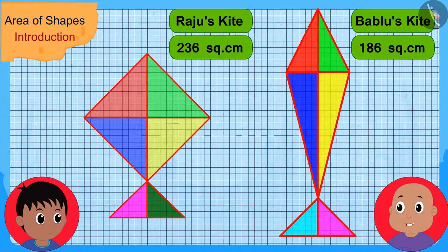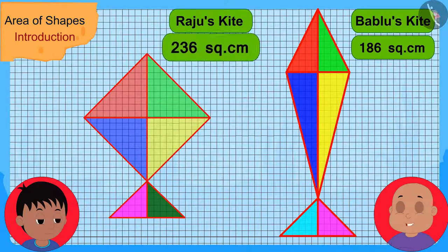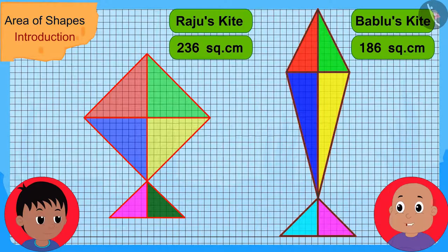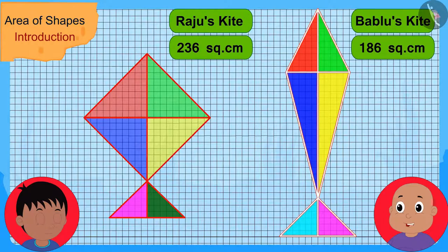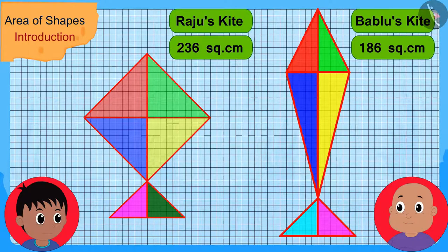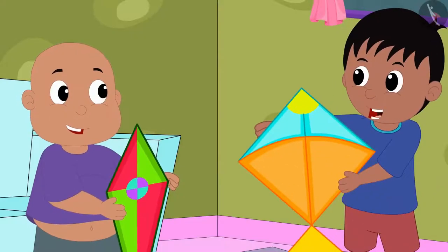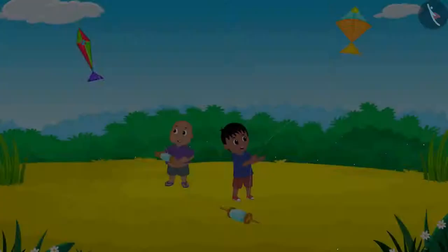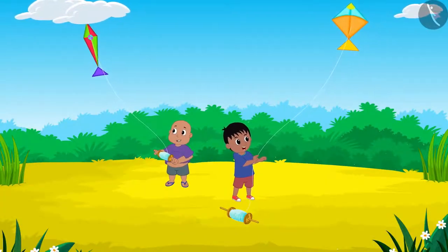Raju also found the area of Bablu's kite. Bablu confirmed, "Yes Raju, you are right. Your kite's area is 236 square centimetres and my kite's area is 186 square centimetres. So your kite is bigger than my kite." Raju then said, "Let us go to the playground and fly our kites," and the two friends went to the playground to fly their kites.